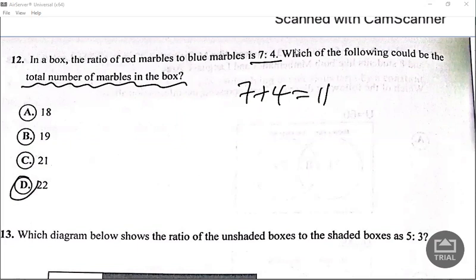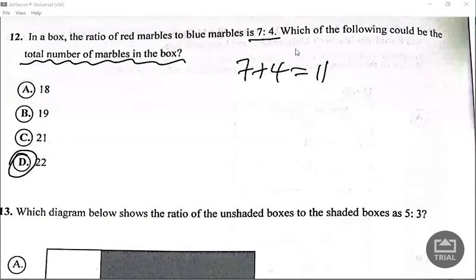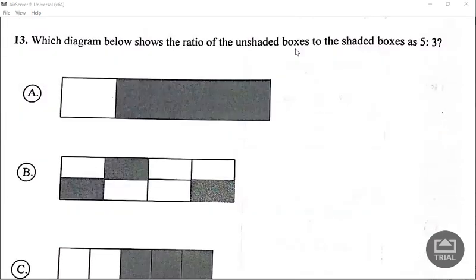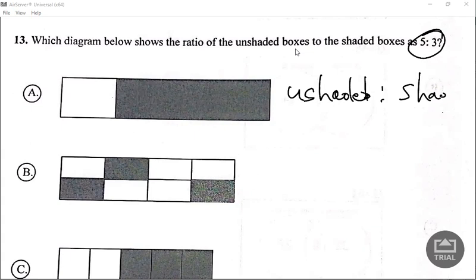Let's look at 13. Which diagram below shows the ratio of unshaded boxes to the shaded boxes as 5 to 3? Now notice it says unshaded first. Whichever is named first, that is the one that you're going to be, so the bigger portion should be the unshaded.